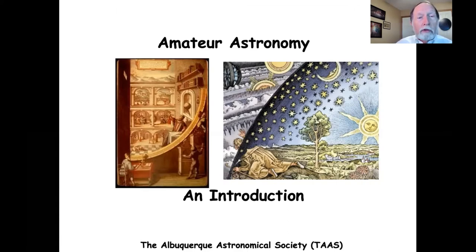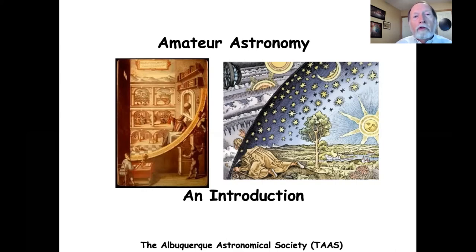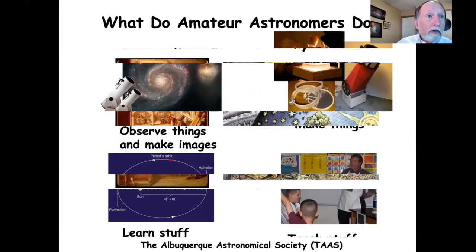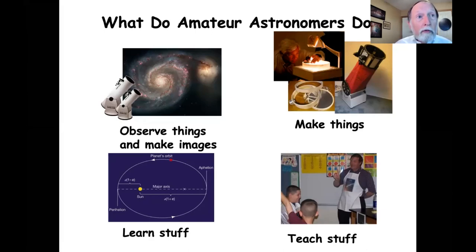Amateur astronomy is one of those few sciences where amateurs play an active role. It's also an activity where participants enjoy both observing and imaging celestial objects, using everything from the naked eye to binoculars to telescopes and digital cameras. We attend lectures and educate ourselves about astronomy, and we teach students and the public about astronomy.